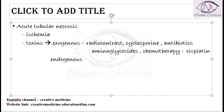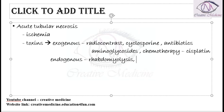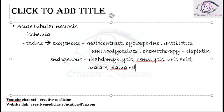Endogenous toxins mainly include rhabdomyolysis, hemolysis, uric acid, and oxalate. Plasma cell dyscrasias can also be involved. All these are conditions where acute tubular necrosis can occur.